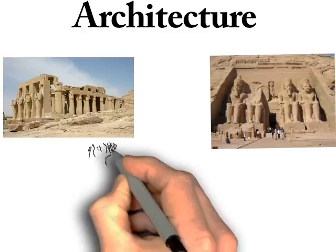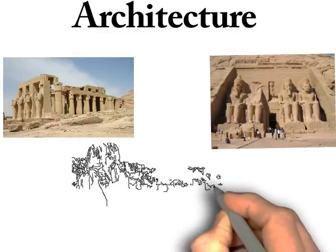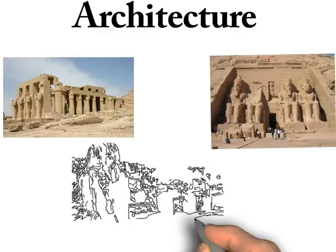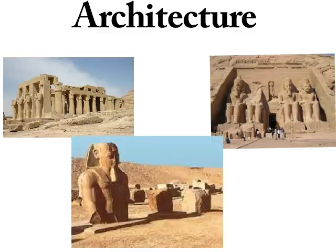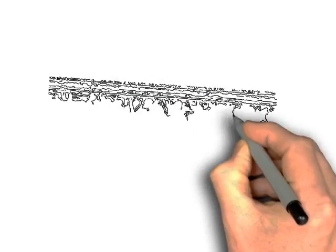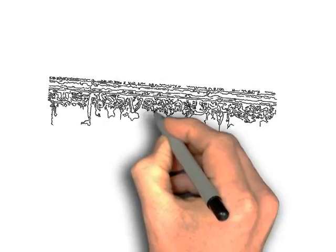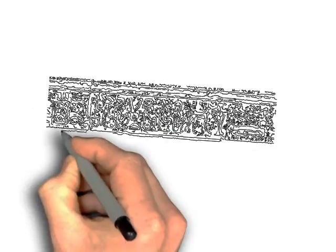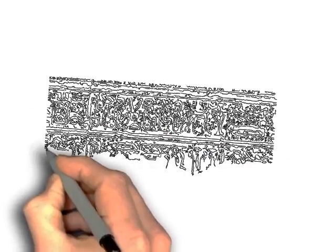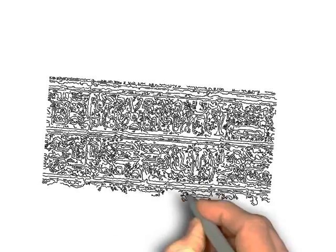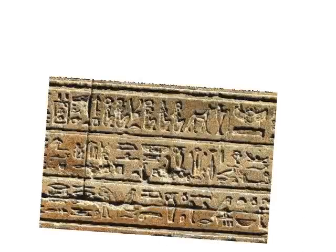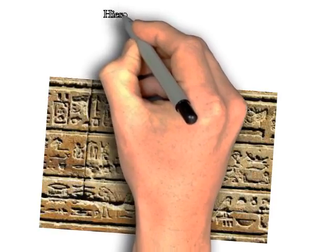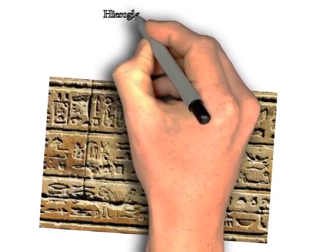Literature. Egyptian literature was written in the Egyptian language, which was called hieroglyphs. Their literature is known as the world's earliest literature. Hieroglyph is made up of two Greek words: hieros meaning holy, and glyph meaning writing. Hieroglyphs use small pictures which represent the sound of an object or an idea associated with the object. Hieroglyphs were first discovered by a French captain known as Pierre Bouchard.